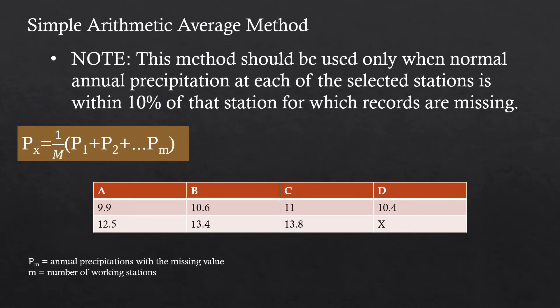In this problem, we have the following data: the first row defines the normal or average annual precipitations while the second row shows the period with missing data at station D. First, we need to check if the annual precipitation at each selected station is within 10% of the station for which records are missing. To do this, we first identify the normal annual precipitation corresponding to the missing value. Station D has a missing value, so the corresponding normal annual precipitation is 10.4.